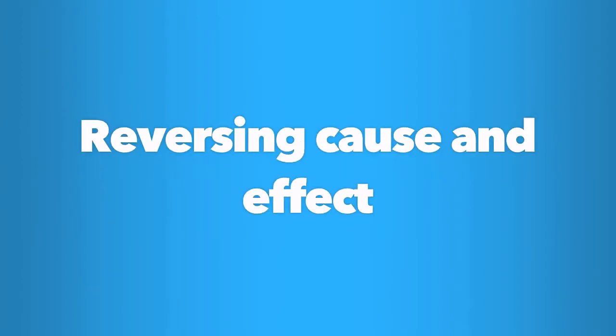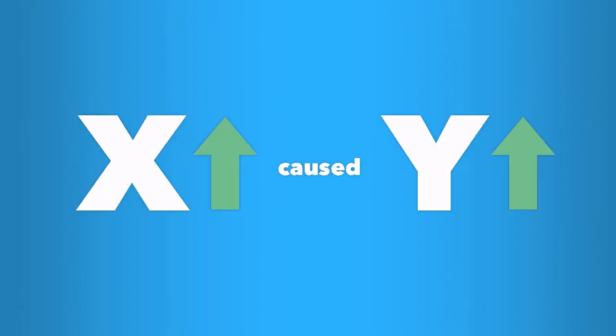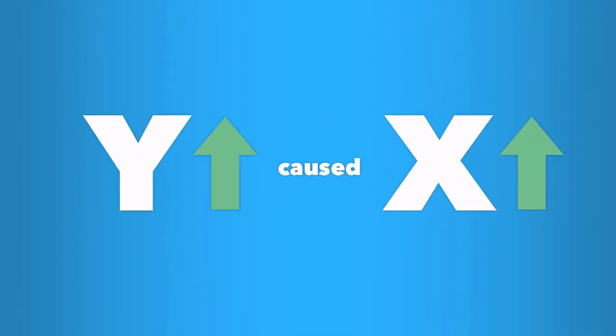In the previous examples, you were asked to consider how to explain causality between two correlated things, X and Y. When we know two things are correlated, we often then try to find out if it is true that one of those things caused the other. Sometimes, we commit an error by getting it wrong. We think X caused Y, but really, it's the other way around. Y caused X.